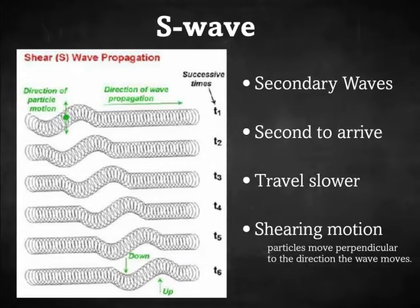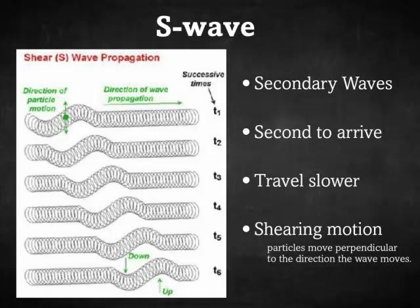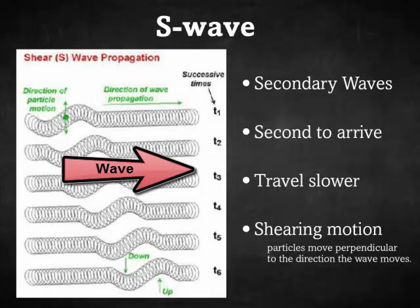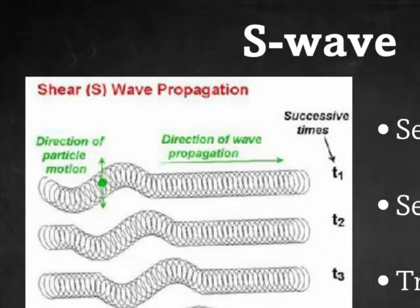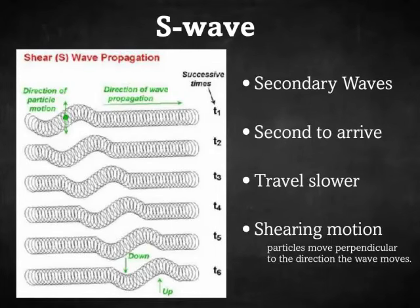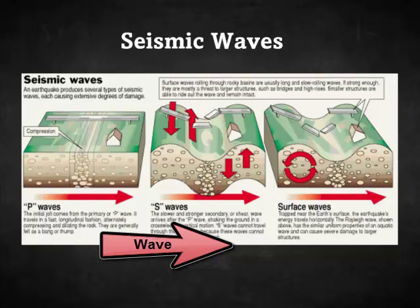An S wave is the slower wave — the second to arrive, and therefore called a secondary wave. The wave travels from left to right, but the particles are moving up and down, perpendicular to the direction of travel. This is called a shearing motion. Since the particles and the wave are not moving in the same direction, they work against each other, causing it to move more slowly.